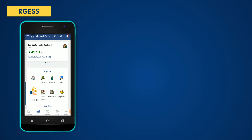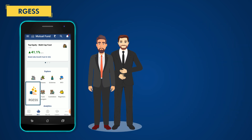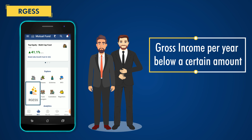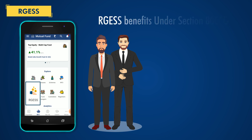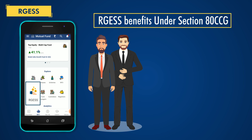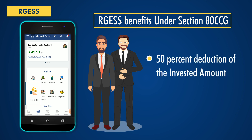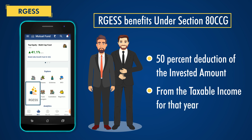It was introduced to encourage new investors who have a gross income per year below a certain amount to invest their savings in the domestic capital markets. One of the benefits of the RGESS scheme is that under Section 80CCG, investors are allowed a 50% deduction of the invested amount from the taxable income for that year.